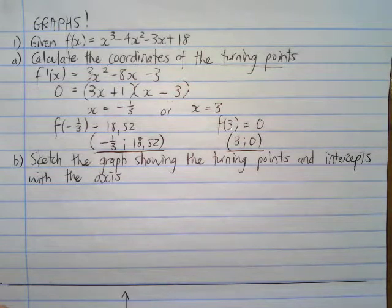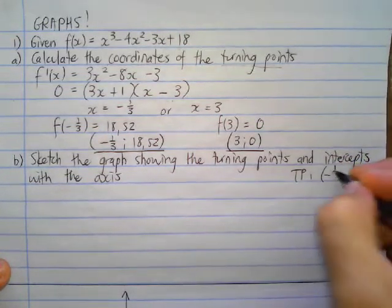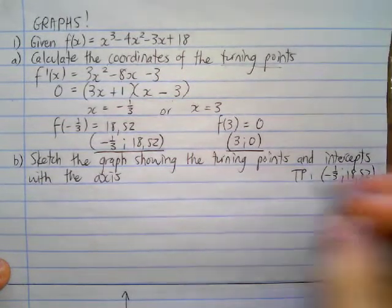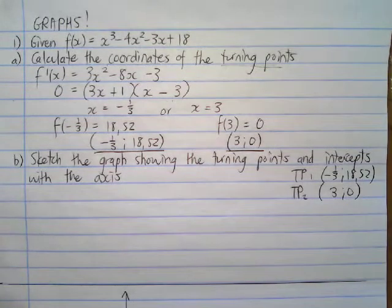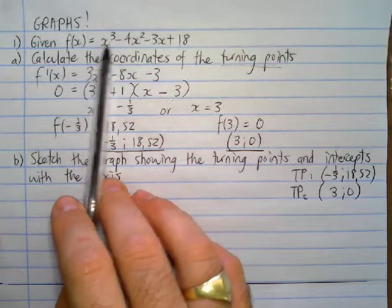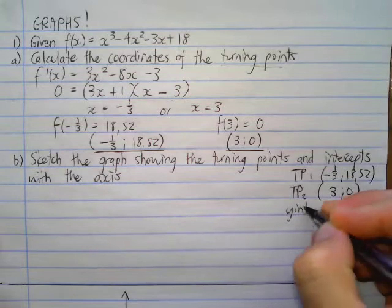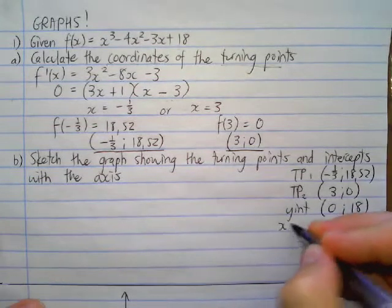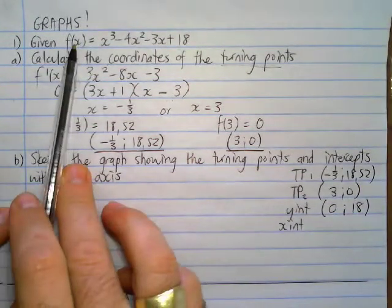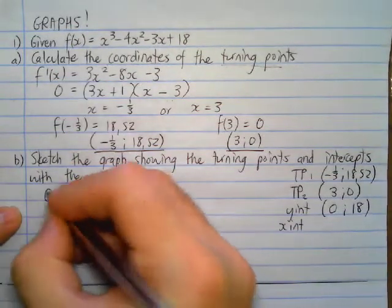Part b: sketch the graph showing the turning points and the intercepts with the axes. We have turning point 1 at (−1/3, 18.52) and turning point 2 at (3, 0). For the y-intercept, make x = 0: substituting in gives 18, so the y-intercept is (0, 18). To find the x-intercepts, we set y = 0 and solve the original function.